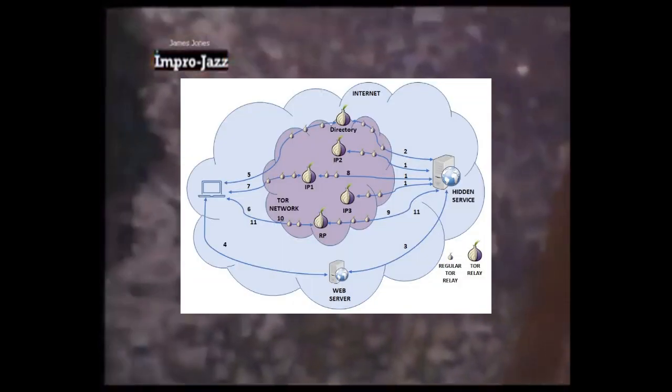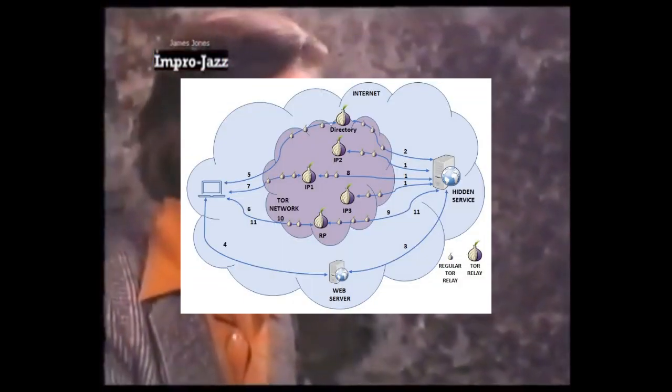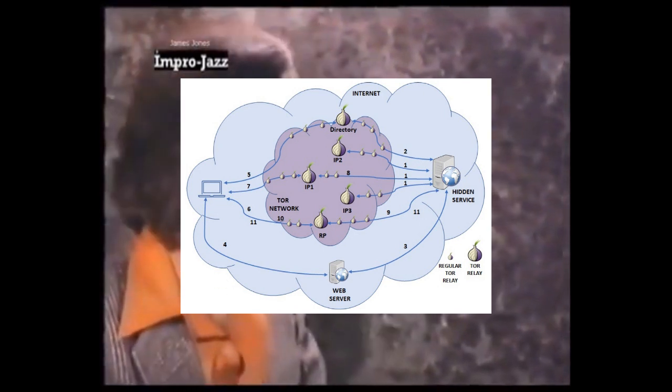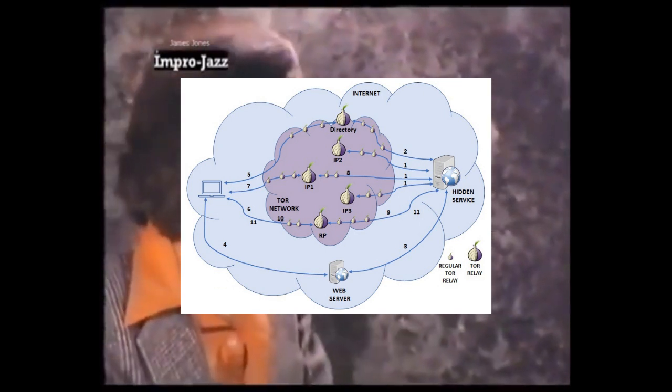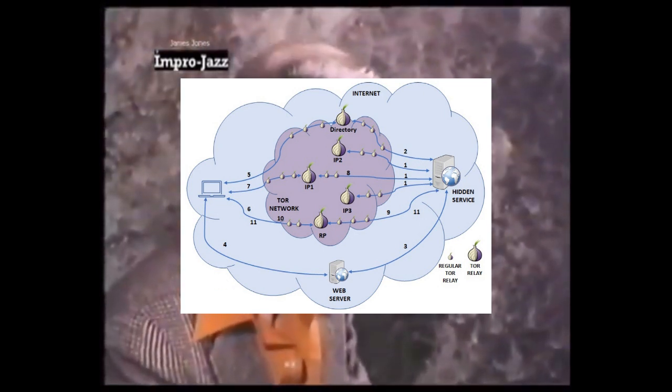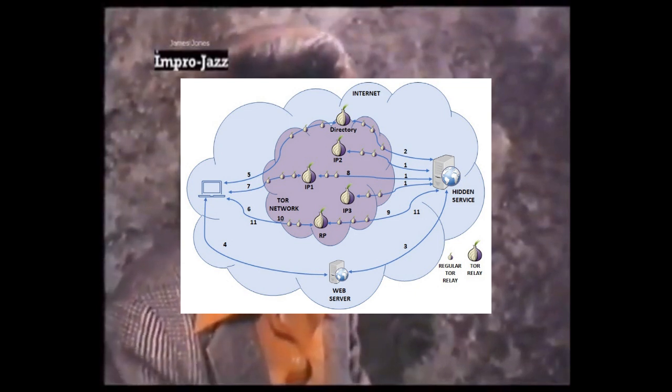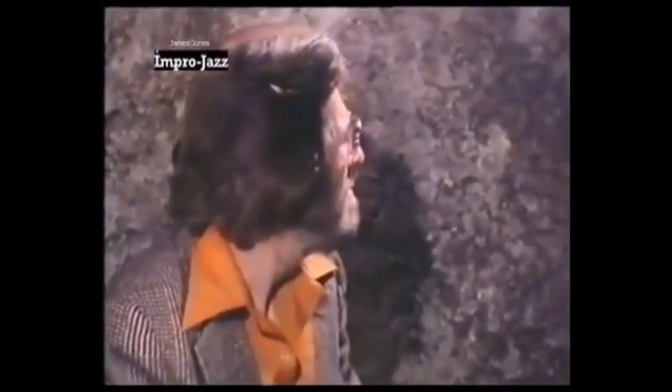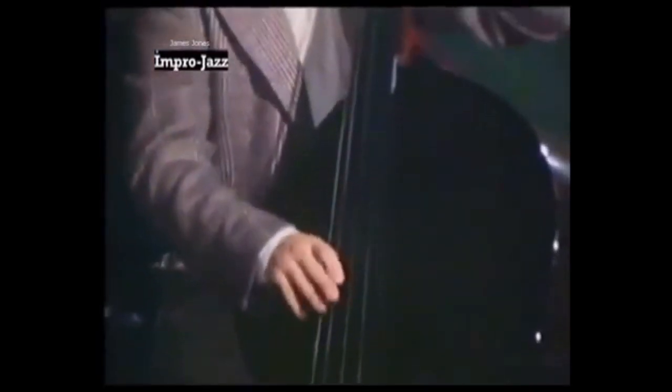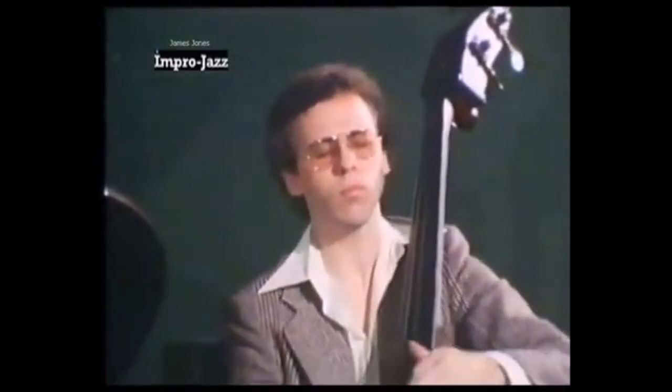If you don't know what a Tor hidden service is, it's basically a website that you can access that exists within the Tor network without you knowing the website's IP address or the website knowing your IP address. It's essentially just a way to connect to websites and utilize services over the internet in an anonymous way.